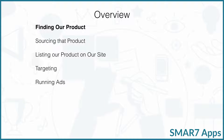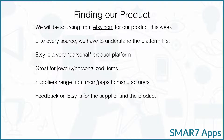We're going to be finding our product in this video, which we'll be going over the shoulder into Etsy, doing exactly what I would do if I was going to be sourcing a product from Etsy. In the next couple of videos, we're going to be talking about sourcing that product, contacting our supplier, listing our product for success on our site, and then targeting and running ads. We'll be resourcing from Etsy.com for our product this week. Next month, we will be sourcing from somewhere else.